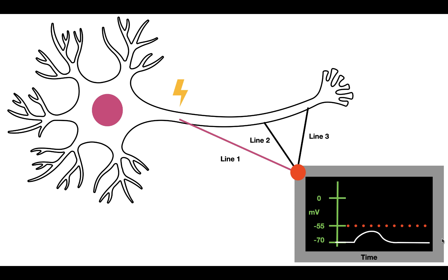How would this stimulus look at line two? Since the stimulus travels down the axon, at line two we see that it starts at a later time — because it takes time to travel — and the stimulus reaches a lower level of depolarization. So instead of coming up to the same level, it only goes up to a lesser height, then repolarizes back down to resting potential.